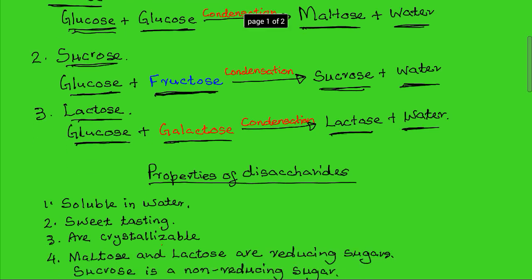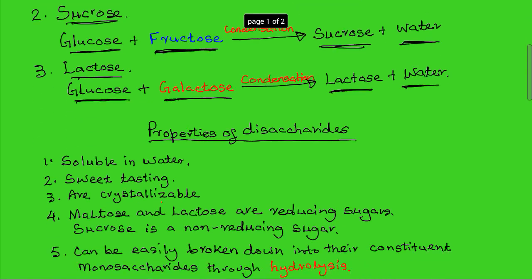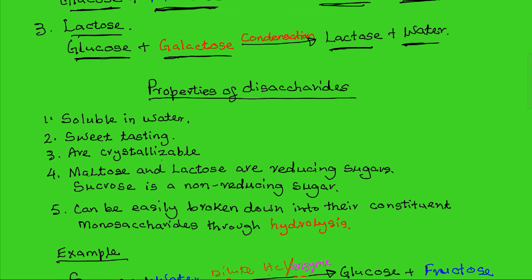The properties of disaccharides are very similar to those of monosaccharides because they are both sugars, only that disaccharides are complex. They are regarded as complex sugars because their molecule is a compound of two smaller monosaccharides. The first property is solubility — disaccharides are soluble in water, and in fact, compared to monosaccharides, they are about three times more soluble in water.